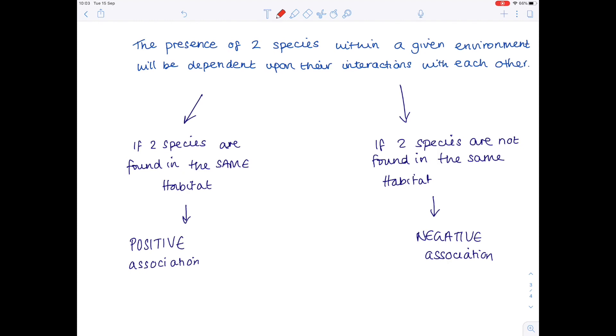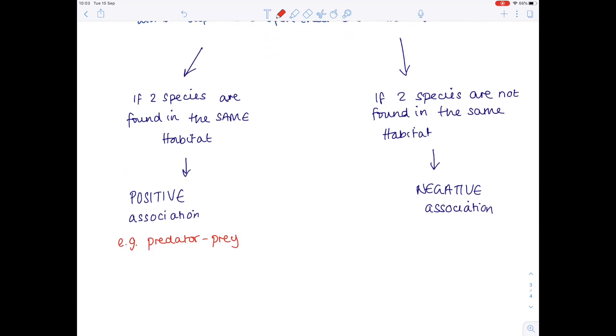To give this context I want to mention some examples. A positive association where we know two species are found in the same habitat will be species whose populations very much depend on each other, for example the predator-prey relationships. Foxes and rabbits will exist in the same area because the fox is the predator which feeds upon the prey, which is the rabbit.